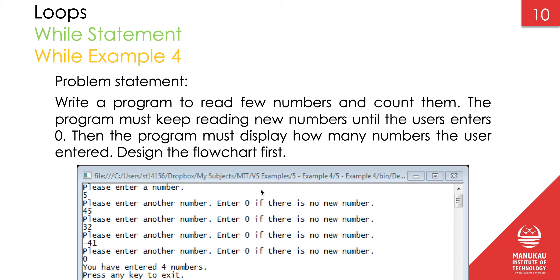In this program, we want to read how many numbers the user wants to enter. We don't know exactly how many numbers there are, meaning every time we run the program we may end up reading a different number of inputs. Since we don't know how many times we want to do this, we need a while loop. All we know is the last number is zero, and the program needs to print how many numbers, excluding zero, the user has entered.